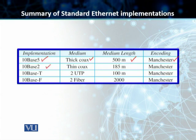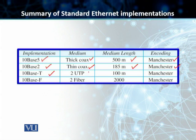Then we had 10Base2, which uses a thinner version of the coaxial cable. That use of thin coax actually reduced the cost, and it has a medium length of 185 meters — once again using Manchester. Then 10BaseT uses two unshielded twisted pair cables, with a maximum length of 100 meters and Manchester encoding. Then we had 10BaseF — F means fiber — which uses two unidirectional fibers with a massive medium length of 2000 meters, also using Manchester encoding.